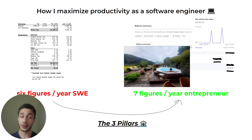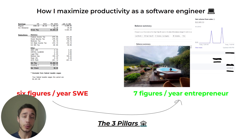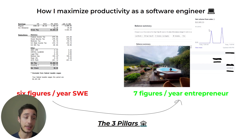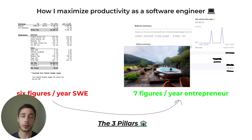I want to show you how you can maximize your time as a software engineer using what I call the three pillars. These three pillars are the same exact ones that helped me transform myself from just a regular six figure per year software engineer to seven figures per year entrepreneur. You can see just in the last month alone my business brought in almost $220,000 in revenue and today we did $22,000 in net volume. There's a lot more that went into it than just these three pillars for productivity, but these were a very big component that made me transform from six figures to seven figures.